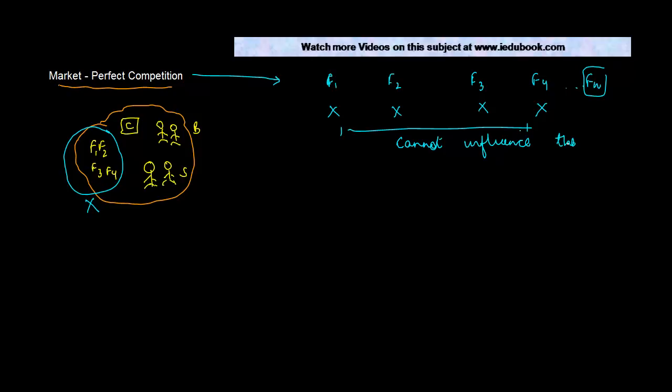And there is a commodity. A perfect competition market is a market wherein none of the firms - so let's say you have four firms in this case - in a perfect market condition, none of these firms, neither F1 nor F2 nor F3 nor F4, or they could be as many as possible up to Fn, none of these firms can individually influence the market price of a product on their own.